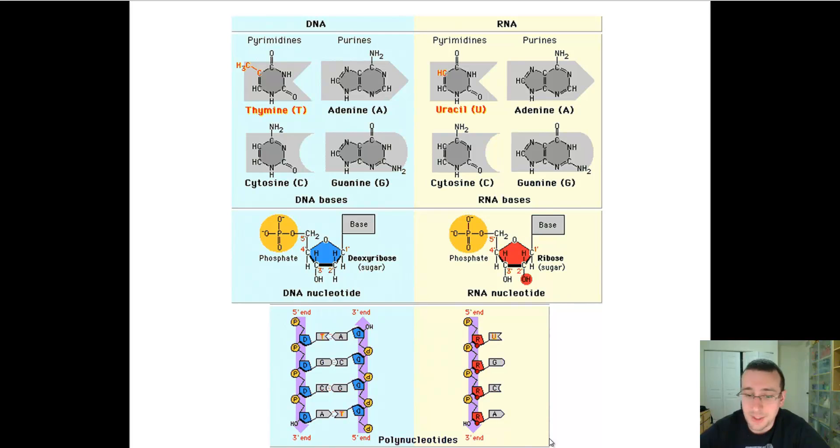The sugar is different between the two of them. The sugar in DNA is deoxyribose that doesn't have oxygen on its second carbon, as you see right there. On RNA, you do have that oxygen, and that's why it's called ribose and not deoxyribose.